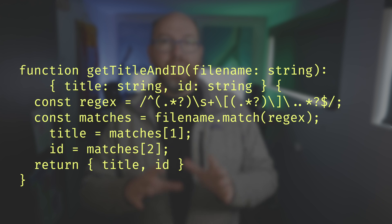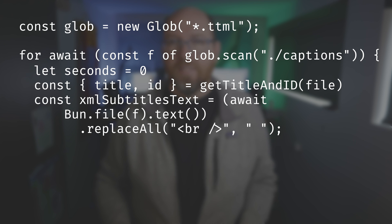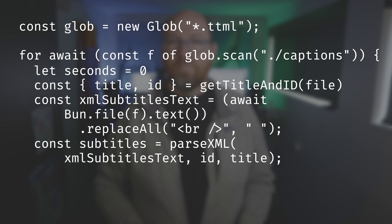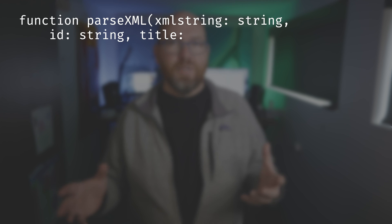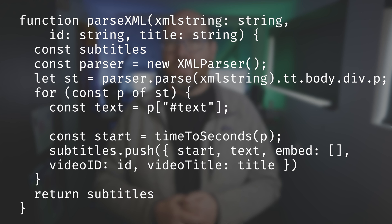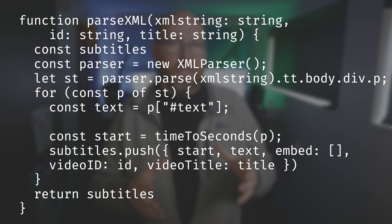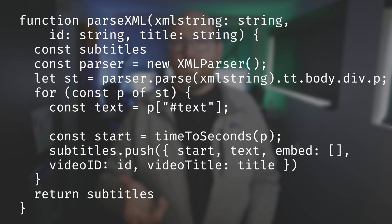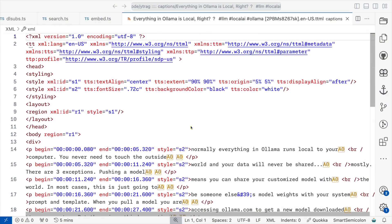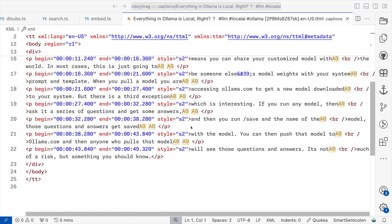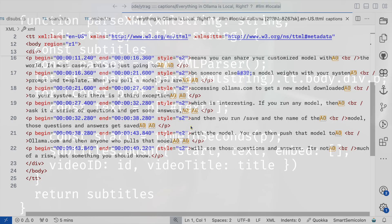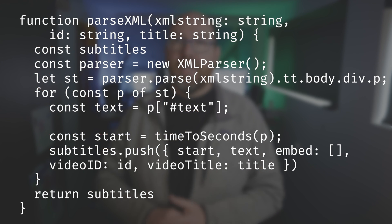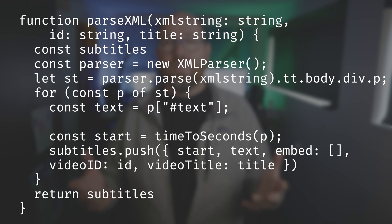Then I read in each file and do some quick cleanup of the incoming text. Next, I parse through the XML in this parseXML function. parseXML takes the XML string and the ID and title of the video. The XML parser library simply converts the XML to JSON, which is easier to work with. Here's an example of the raw XML — the good stuff shows up under the body tag, then div, then p. So for each p tag, grab the text and the beginning timestamp, then push that to an array, and that's the return from the function.